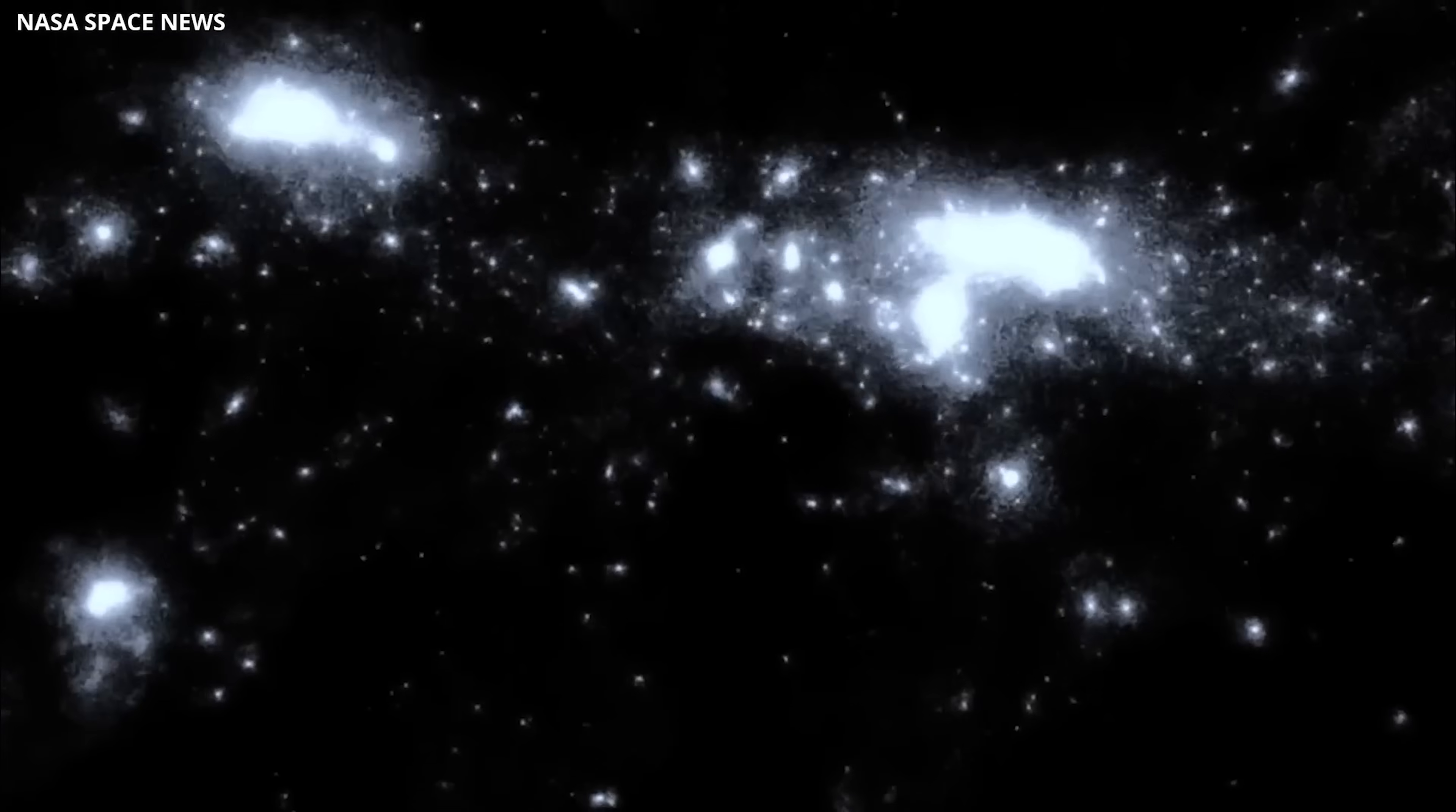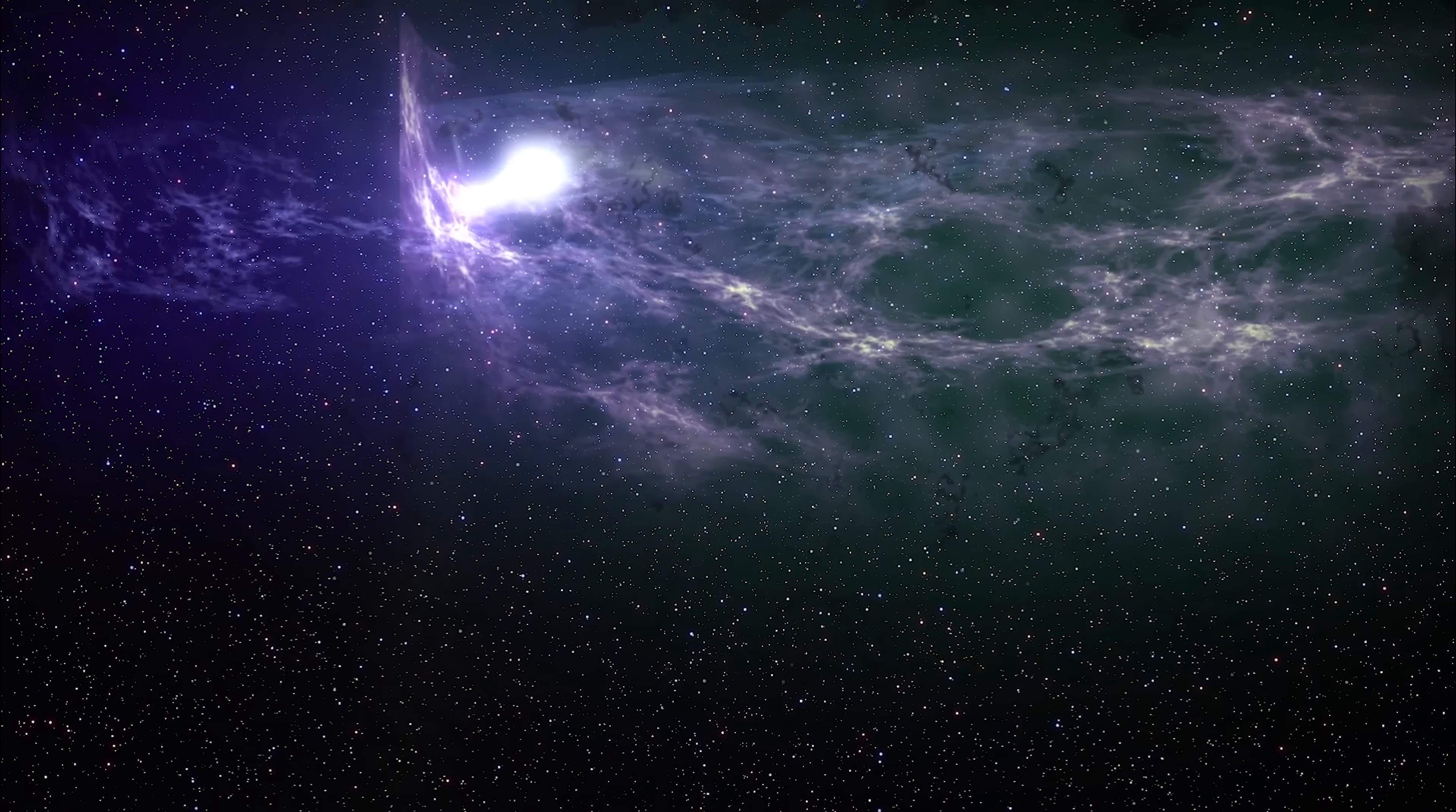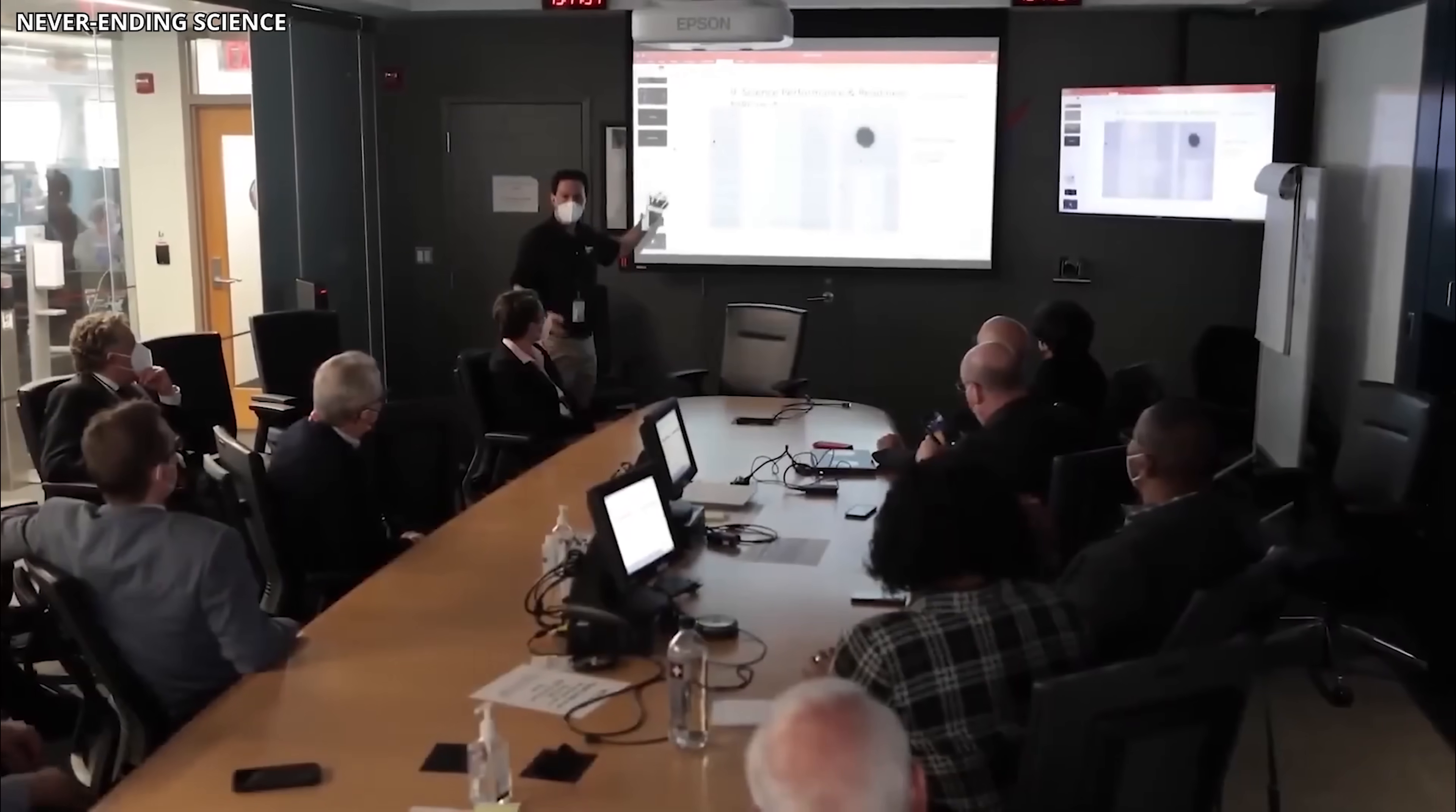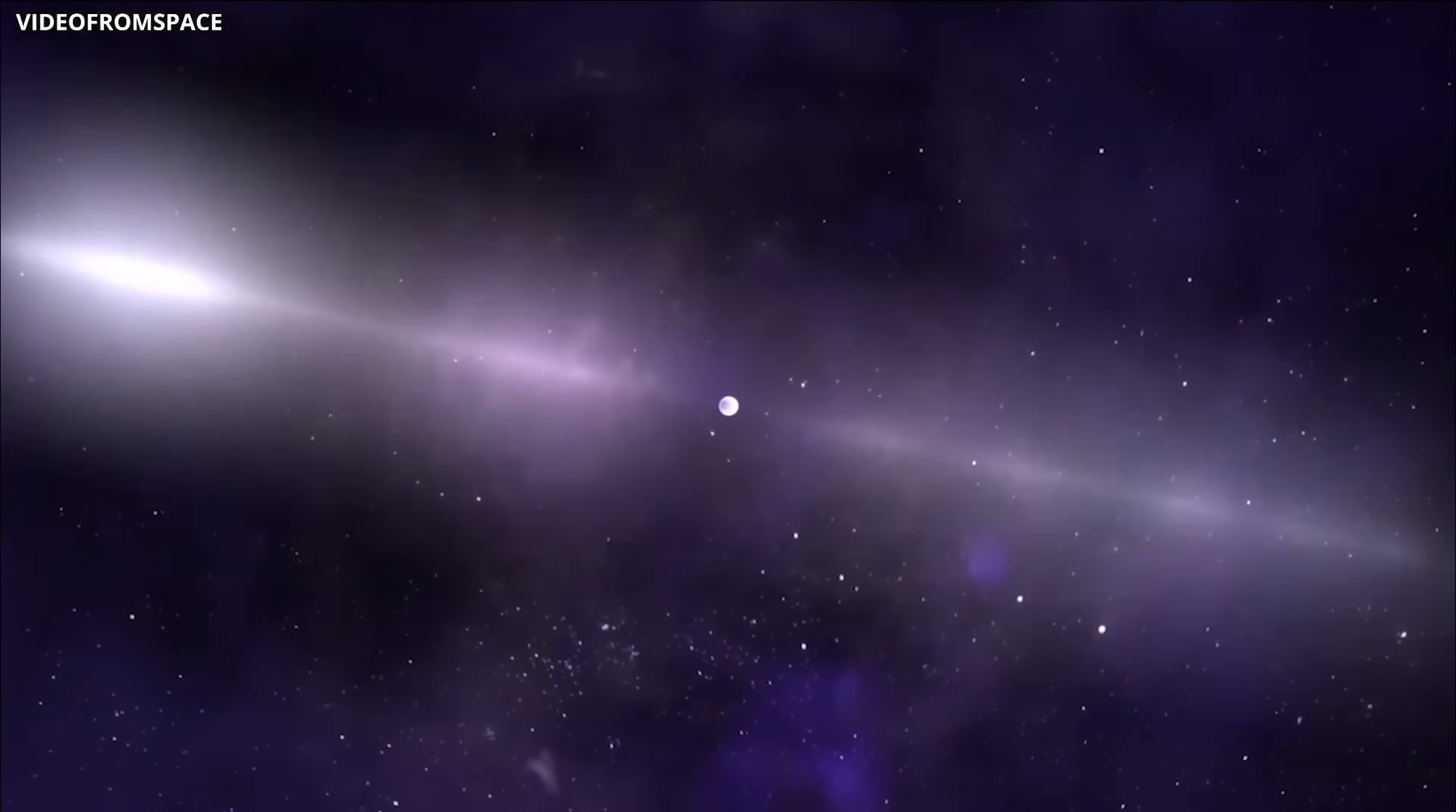and with decades of simulations showing how countless subhalos should weave together to form the Milky Way's dark matter halo. Until now, that picture was theoretical. Today, it's becoming tangible. Just as important as the find itself is the method behind it. Using pulsar accelerations and subtle timing deviations gives astronomers an entirely new tool for studying dark matter and even other hidden anomalies with a precision we've never had before.